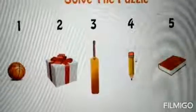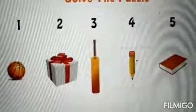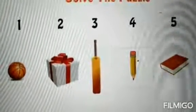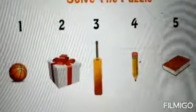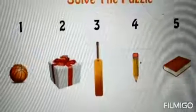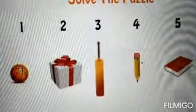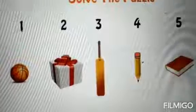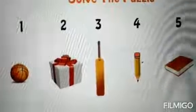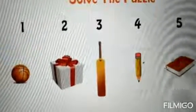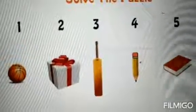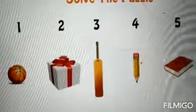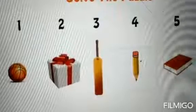Students, let's clear our topic with one more example. Here, the gift which is on number 2 comes before the bat which is on number 3. And the ball which is on number 1 comes before the gift which is on number 2.